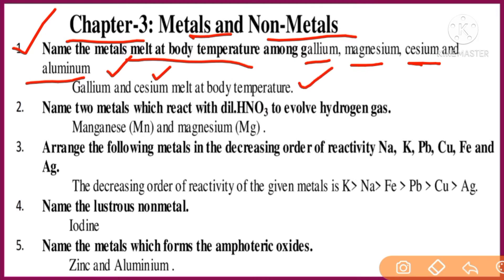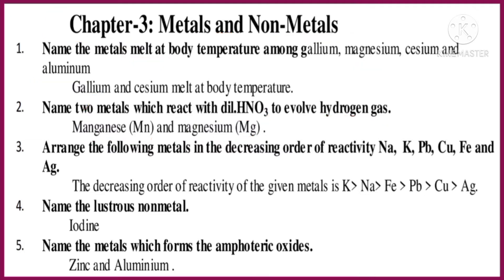Question number two: Name two metals which react with dilute nitric acid to evolve hydrogen gas. Manganese and magnesium are the two metals which react with dilute nitric acid to release hydrogen gas. This question is based on the theme of what happens when a metal reacts with acid — metals react with sulfuric acid and HCl to release hydrogen gas, but not all metals react with nitric acid.